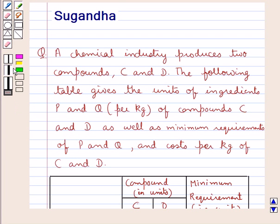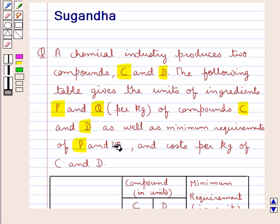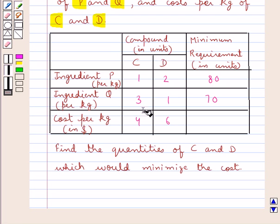Hello and welcome to the session. In this session we discuss the following question: a chemical industry produces two compounds C and D. The table gives the units of ingredients P and Q per kg of compounds C and D, as well as the minimum requirements of P and Q and costs per kg of C and D. We have to find the quantities of C and D which would minimize the cost.